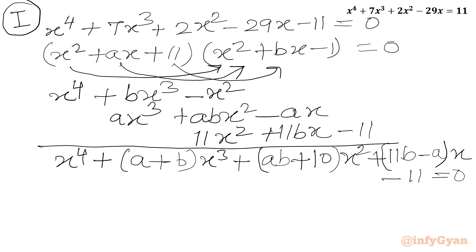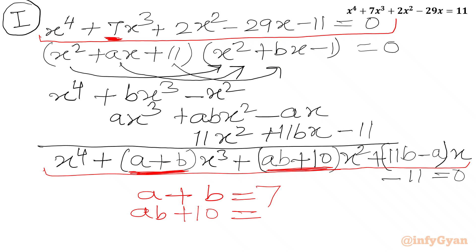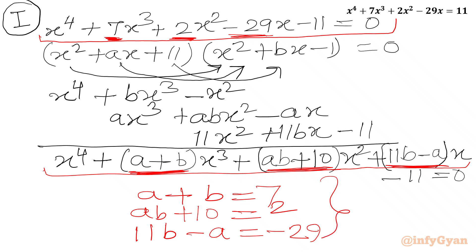Now we are going to compare all the coefficients with the original equation. Comparing the coefficient of x³ gives us a + b = 7. Comparing the coefficient of x² gives ab + 10 = 2. Comparing the coefficient of x gives 11b - a = -29. Now we have to solve these simultaneous equations — solve two equations and cross-examine with the third one.